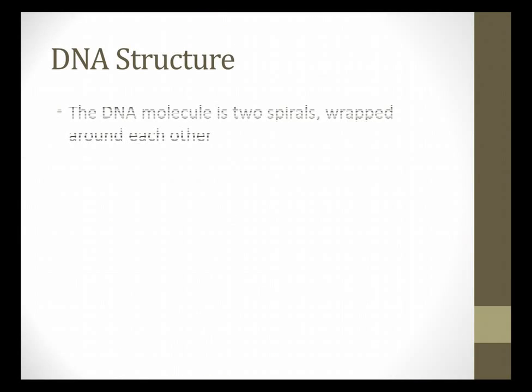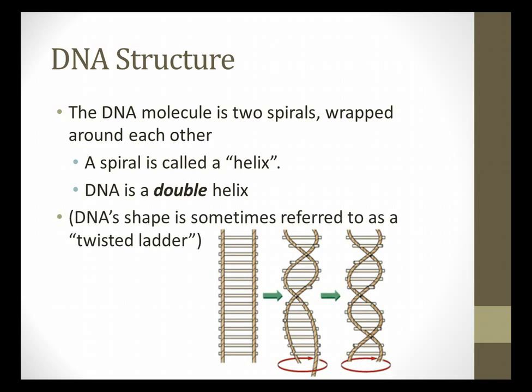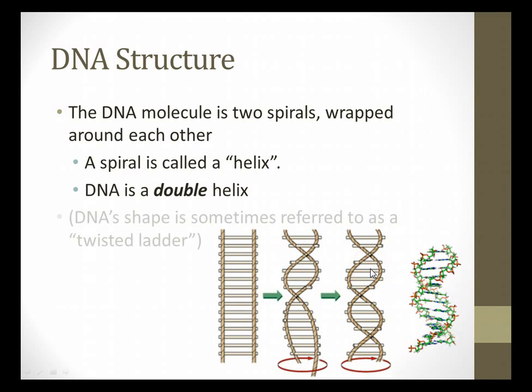Structure of DNA. DNA molecule is two spirals wrapped around each other. The official term for a spiral is called a helix. In the case of DNA, there are two helixes or helices. So we would say that it is a double helix. That shape is sometimes referred to as a twisted ladder. You can see this kind of looks like a ladder, and if you give it a little twist right there, you kind of get roughly the shape of DNA.